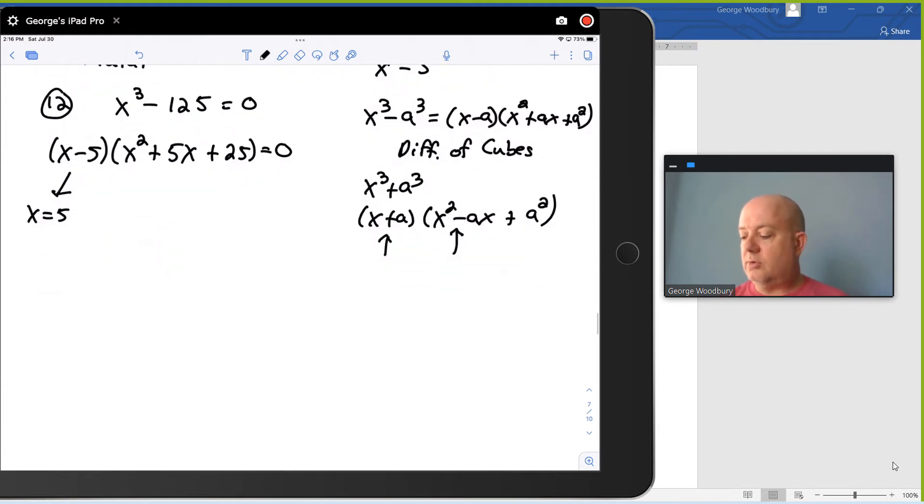So I'm going to use the quadratic formula with a equals 1, b equals 5, and c equals 25. x equals the opposite of b plus or minus square root b squared minus 4ac all over 2a.